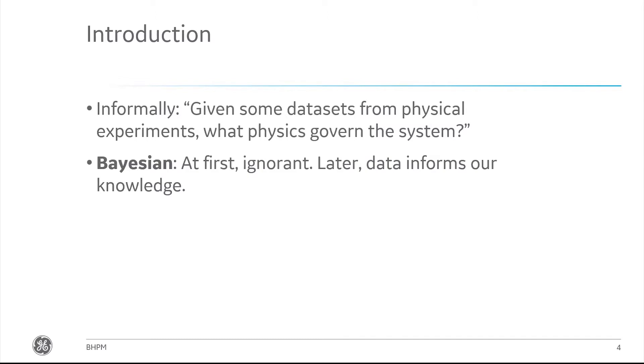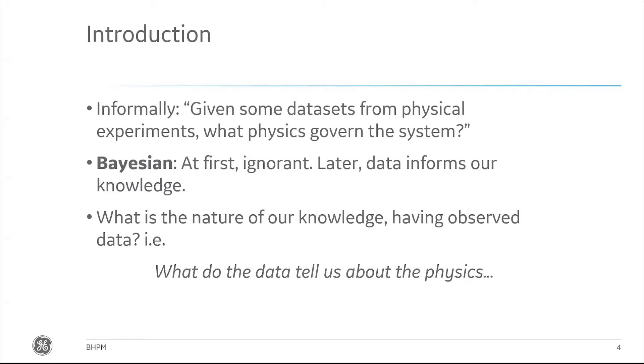I'm going to be talking about a way of approaching this problem that is fundamentally Bayesian, meaning I am going to talk about what it means to be ignorant about the physics that govern a system, and also to be rigorous about understanding how the data updates that belief and reduces our uncertainty about the physics. We want to know what the data are telling us about the physics and what they aren't telling us.